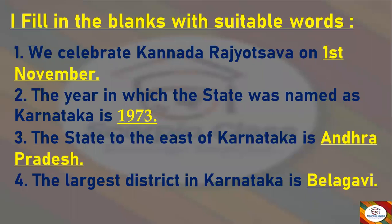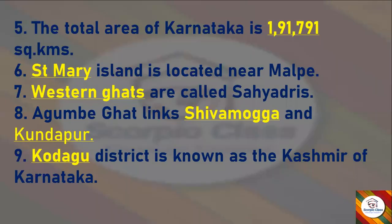First: We celebrate Karnataka Day on the 1st of November. Next: The year in which the state was named as Karnataka is 1973. Next: The state to the east of Karnataka is Andhra Pradesh. Next: The largest district in Karnataka is Belagavi.